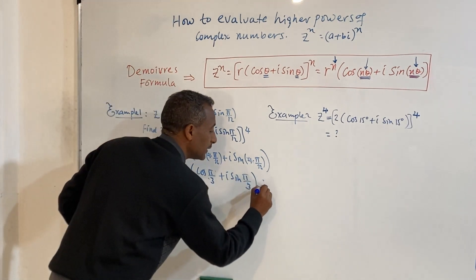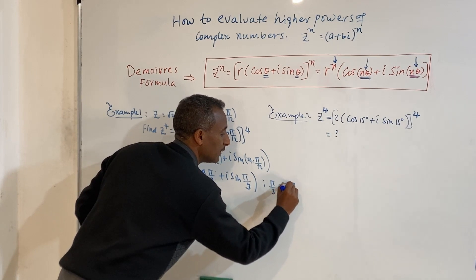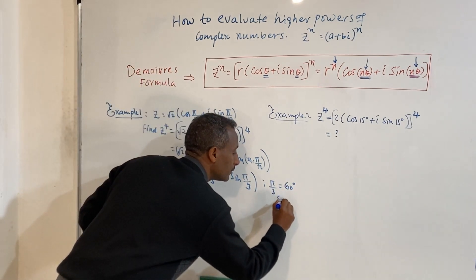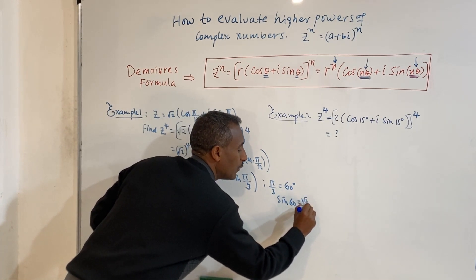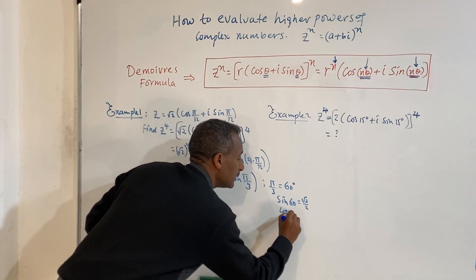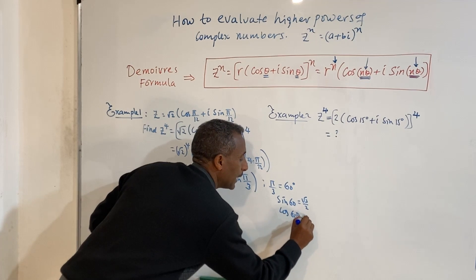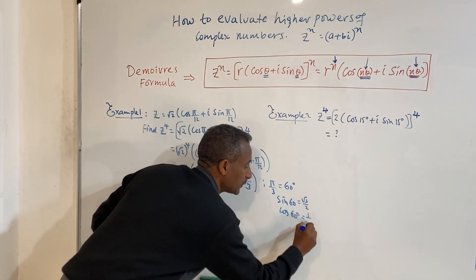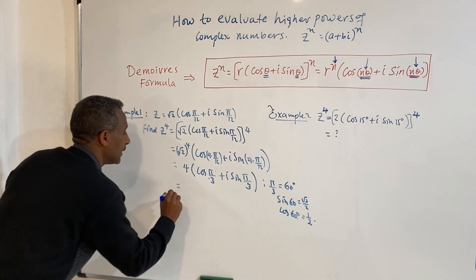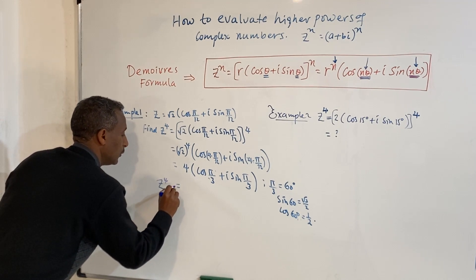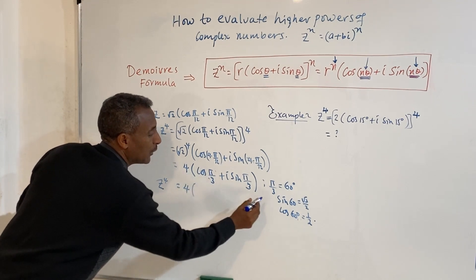And π/12 times 4 gives π/3. pi over 3 is the same as 60 degrees. The sin of 60 degrees is root 3 over 2, and the cos of 60 degrees is 1/2. I can hear my imaginations — the power of 4 will be what?